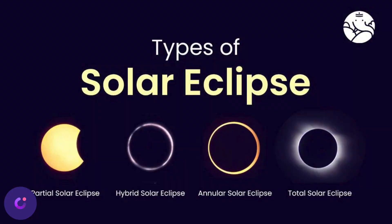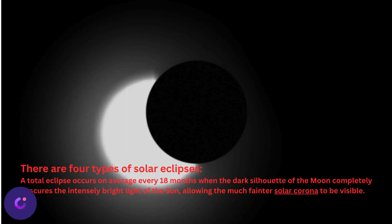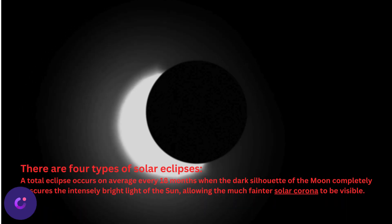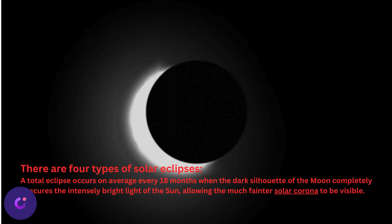Types of solar eclipse: partial, hybrid, annular, and total. There are four types of solar eclipse.